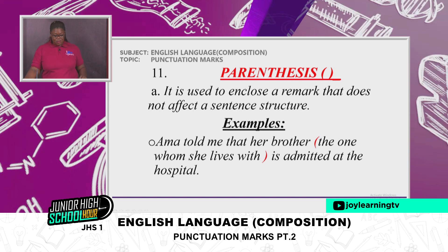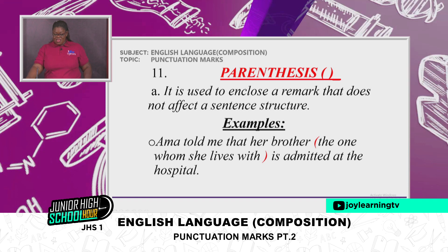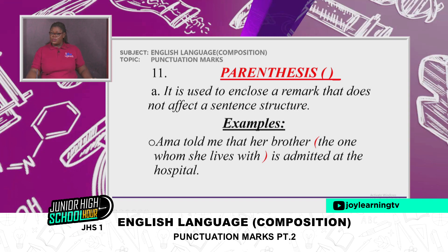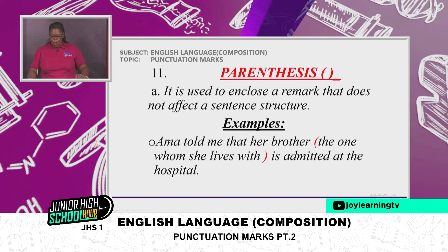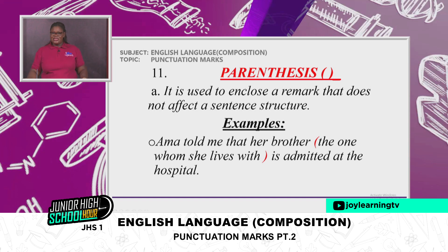We have the last one — parentheses, which we mostly call brackets. It is used to enclose a remark that does not affect a sentence structure. Example: 'Amma told me that her brother (the one whom she lives with) is admitted at the hospital.' The parenthesis opens at 'the one' and closes after 'lives with,' giving extra information about which brother.